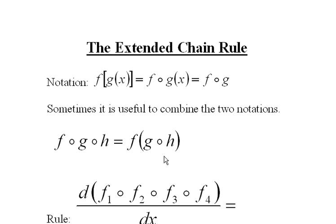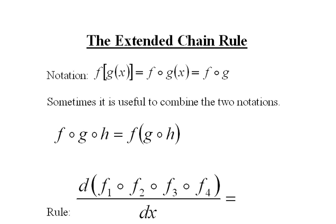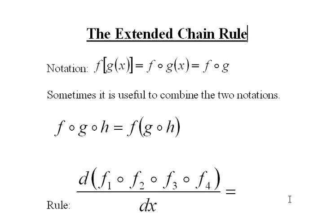Combining the two notations is very useful for explaining the extended chain rule. Now we're not going to extend this on into infinity, we're just going to do four. And once you see how it's done with four, then it's done the same way with five, six, or any number.